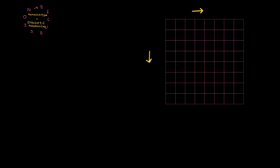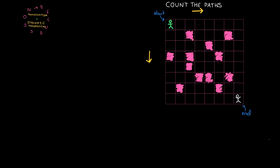Now let's try this out on a new problem. Suppose you're given an N by N grid and you can only move down or to the right, and certain cells are blocked off. The question is how many paths are there from the top left to the bottom right? We want to approach this recursively. The overall problem is how many paths are there from the top left to the bottom right? Well, the first decision the person in the top left corner needs to make is whether to go down or to the right. So the number of paths from the start to the end is the number of paths from position A to the end, plus the number of paths from position B to the end.